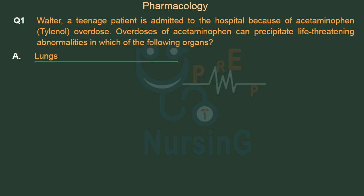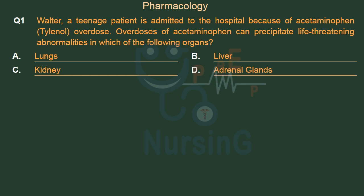Option A: Lungs. Option B: Liver. Option C: Kidney. Option D: Adrenal glands. The right answer is Option B: Liver.